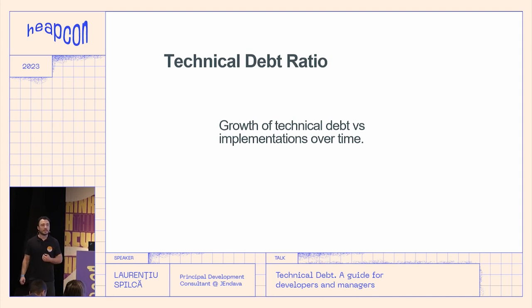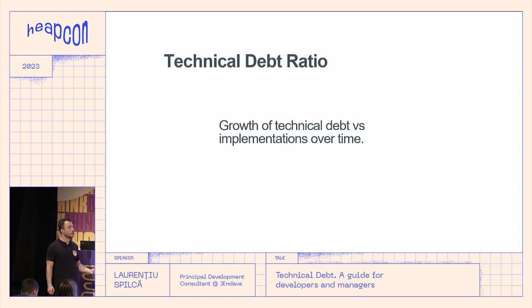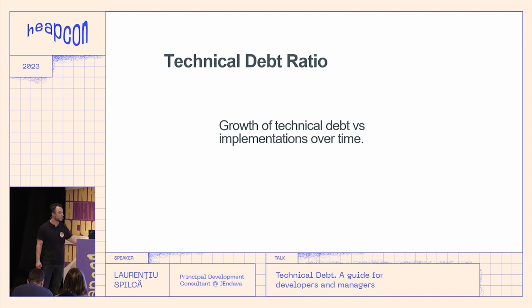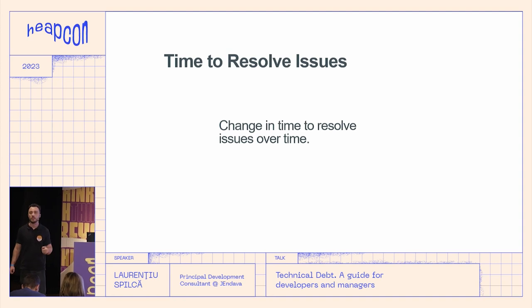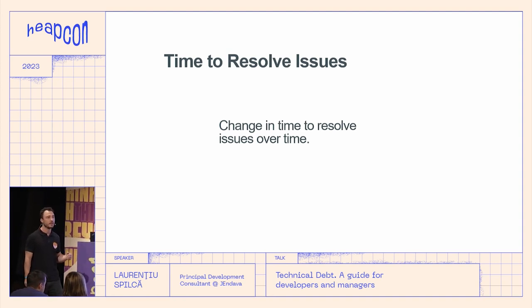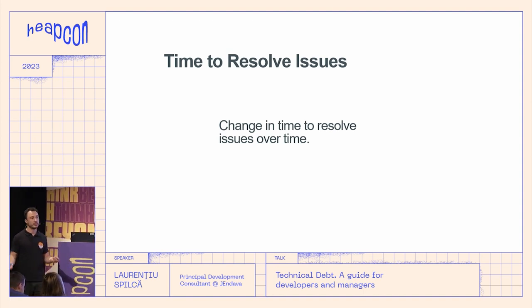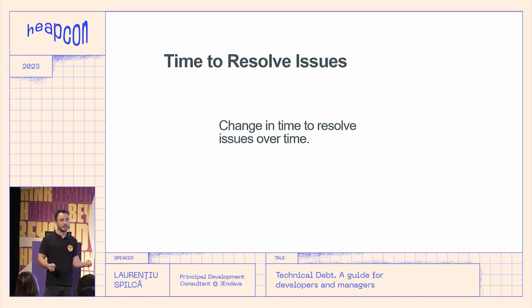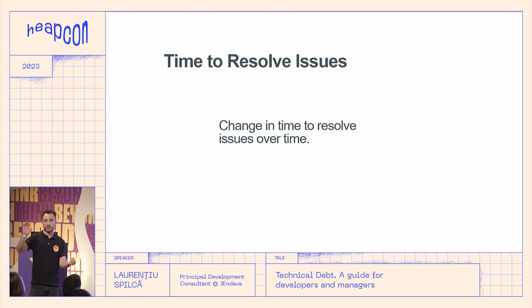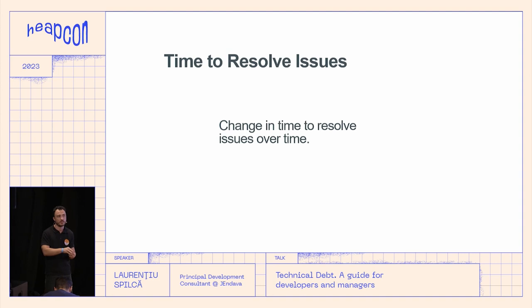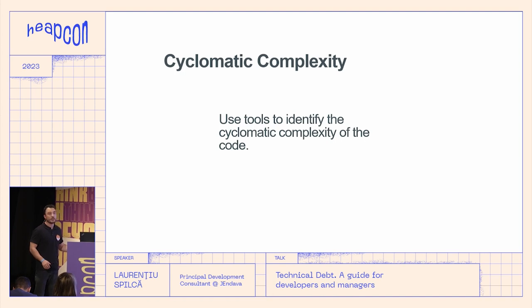You also have the growth of known technical debt — things deliberately left behind during implementation. How much time does it take for developers to resolve specific issues? The longer it is, the closer you are to the point of no return. When you solve an issue in software already burdened by technical debt, fixing one thing often breaks another, especially when there are no unit, integration, or regression tests in place. Then there's cyclomatic complexity.